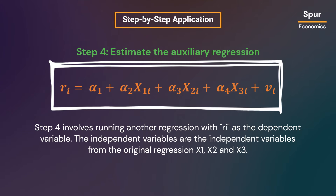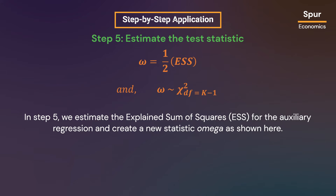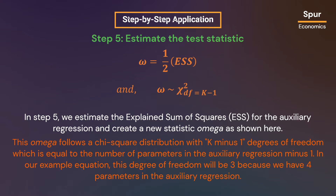Step 4 involves running another regression with ri as the dependent variable. The independent variables are the same as in the original regression: x1, x2, and x3. In step 5, we estimate the explained sum of squares for this auxiliary regression and create a new statistic omega. This omega follows the chi-square distribution with k minus one degrees of freedom, equal to the number of parameters in the auxiliary regression minus one.